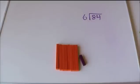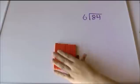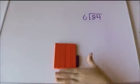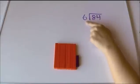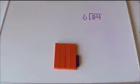84 divided by 6. So here's 84. It is not in a rectangle with 6 on one side, is it? I want to make it into a rectangle with 6 on one side.